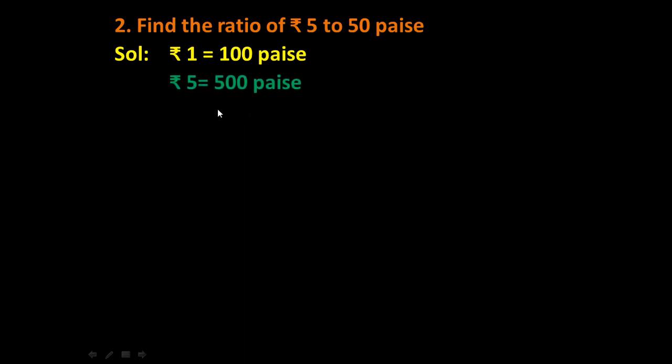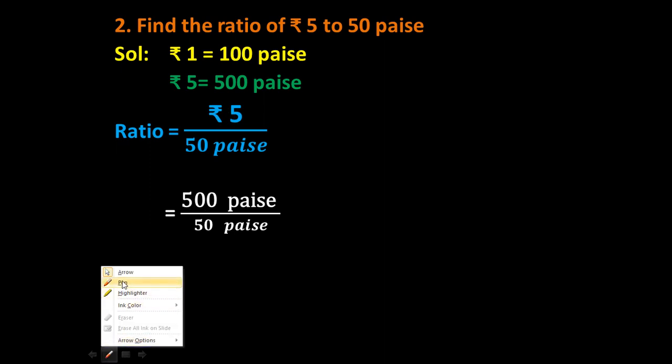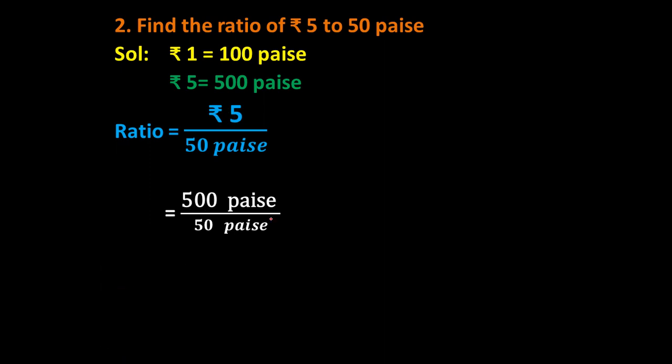Now to find the ratio of rupee 5 to 50 paise, we need to divide. So the required ratio is rupee 5 divided by 50 paise. Now in the next step, in place of rupee 5, I will put 500 paise here. So I get 500 paise upon 50 paise here.